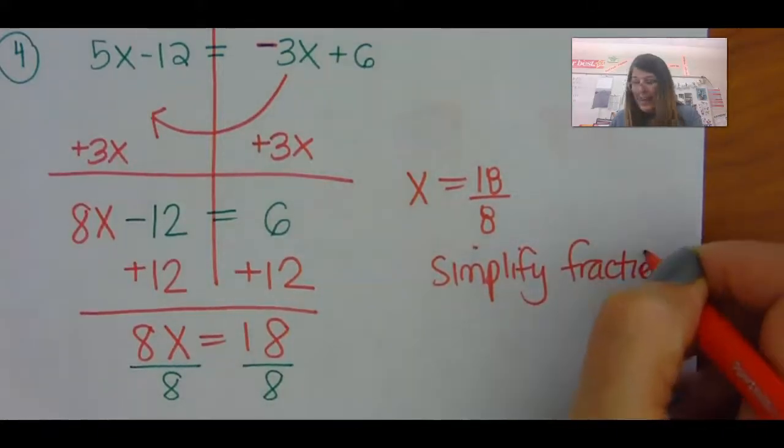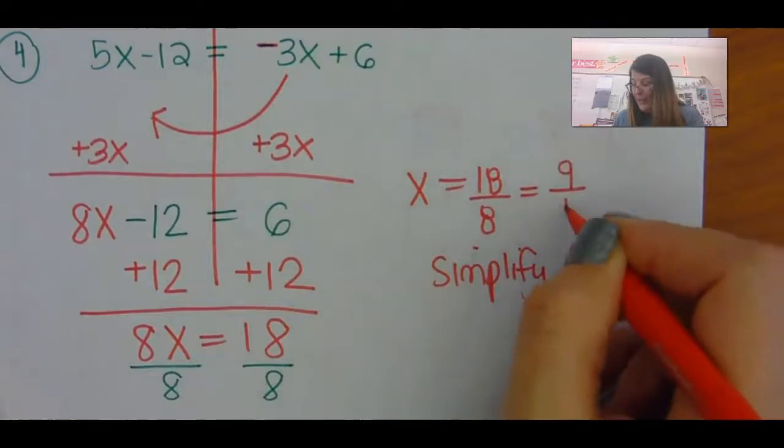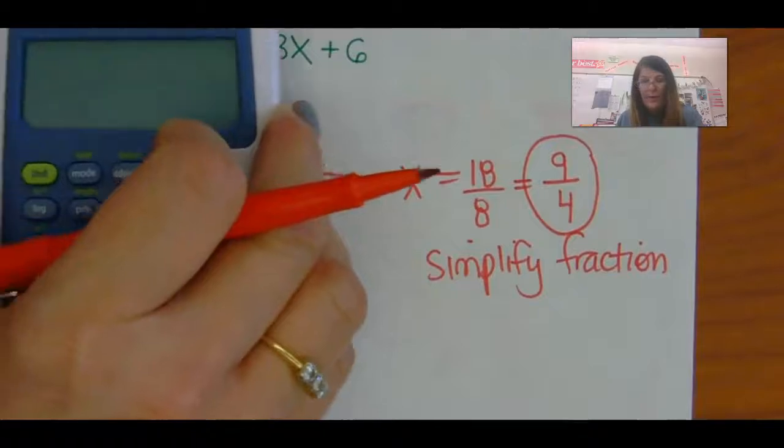So 18 and 8 are both divisible by 2. So that is 9 over 4. So you're going to type in your answer as 9 fourths.